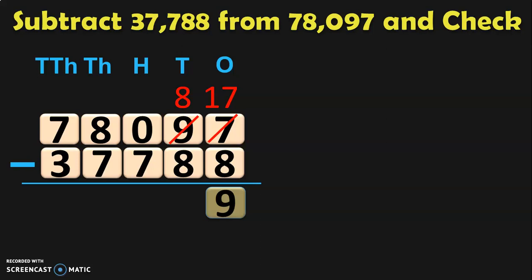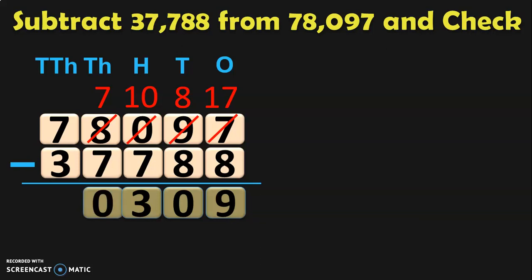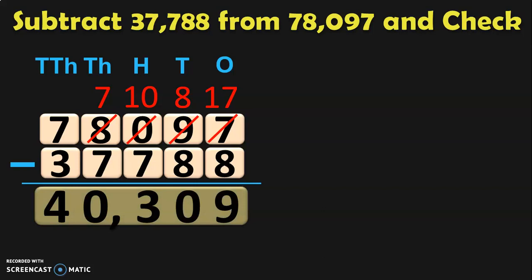Moving to the tens place it is 8 minus 8, which gives you 0 — when a number is subtracted from itself the answer is 0. Next move on to the hundreds place where it is 0 minus 7; since 7 is greater than 0, move to the thousands place and borrow. In thousands place you have 8 thousands; when you borrow it becomes 7 thousands and gives 10 hundreds to the hundreds place. 10 hundreds minus 7 hundreds gives you 3 hundreds. Next in the thousands place 7 minus 7 gives you 0, and in the ten thousands place 7 minus 3 gives you 4. So the answer is 40,309.